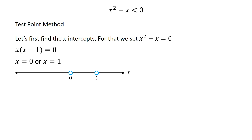Since we want to find the solution for x squared minus x less than 0 and not equal to 0, the values 0 and 1 are not part of the solution. So we draw the number line with open circles at 0 and 1. This divides the number line into three intervals: first from negative infinity to 0, second from 0 to 1, and the third from 1 to infinity.